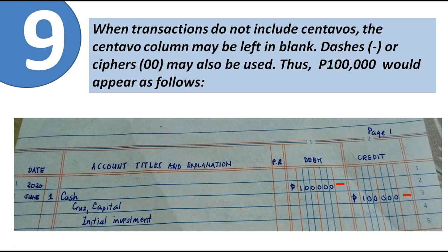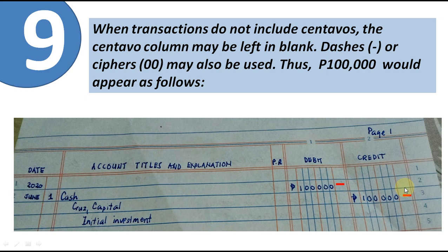When transactions do not include centavos, the centavo column may be left blank. You can also place a dash or write double zero. If there are centavos, write them in the centavo column.